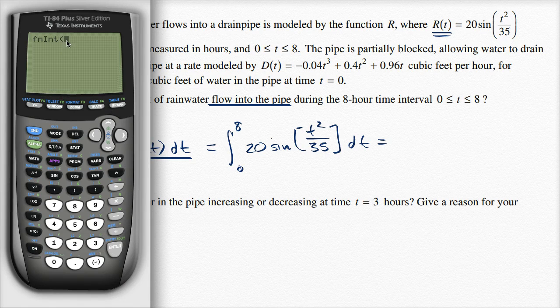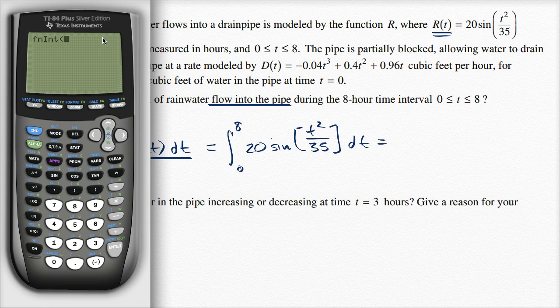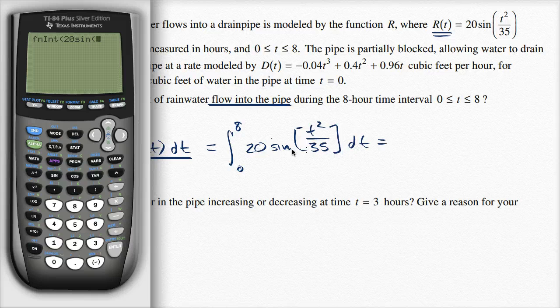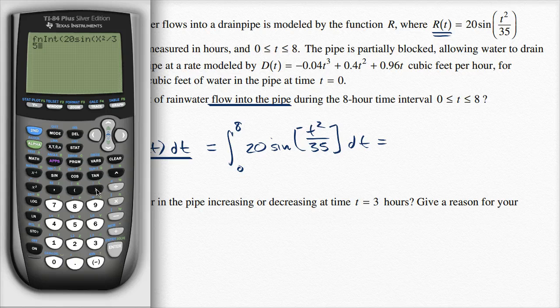And the way that you do it is you first define the function, then you put a comma, then you say what variable is the variable that you're integrating with respect to, and then you put the bounds of integration. So I'm going to write 20 sine of, and just because it's easier for me to input x than t, I'm going to use x. So you're going to get x squared divided by 35, close that parentheses. So that is my function there.